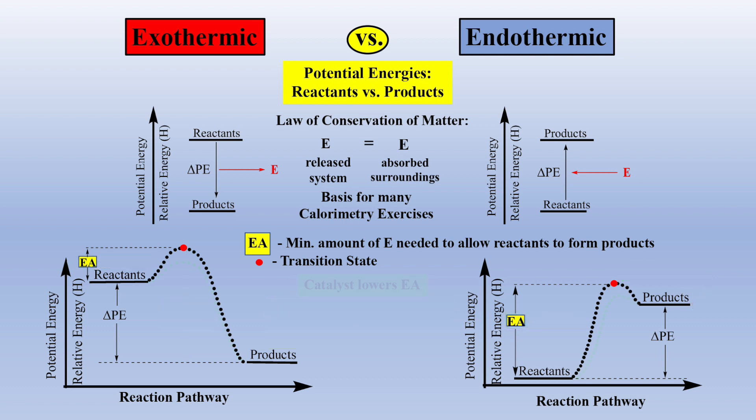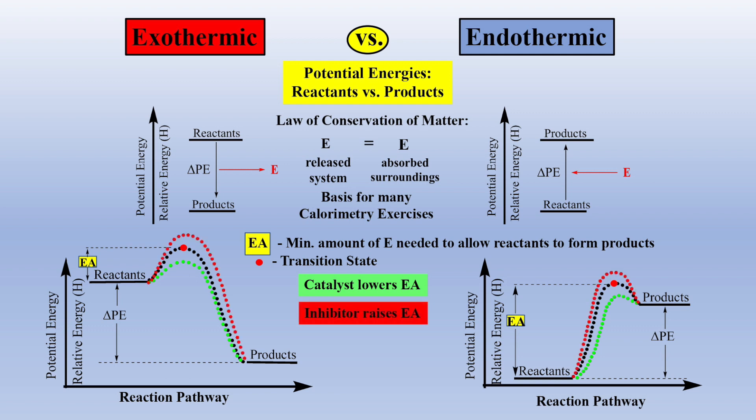This representation also allows us to better demonstrate the effect of adding a catalyst. The catalyst lowers the energy of activation barrier, which allows more products to be formed. Conversely, one could add an inhibitor and raise the energy of activation barrier, which would inhibit the formation of products.